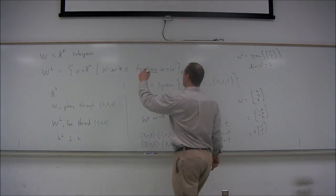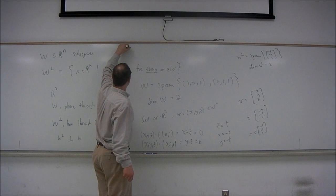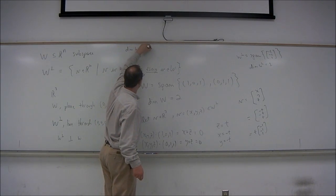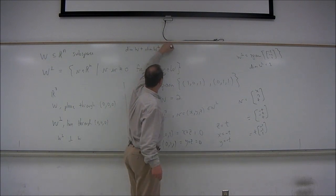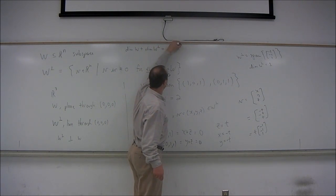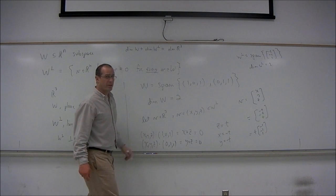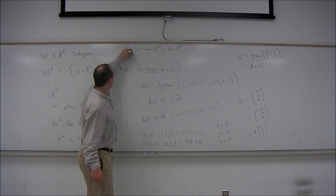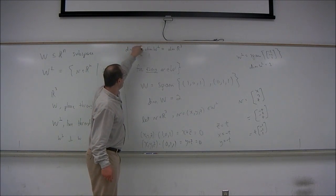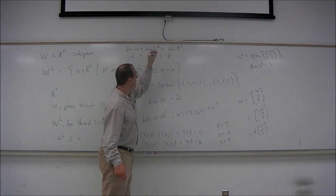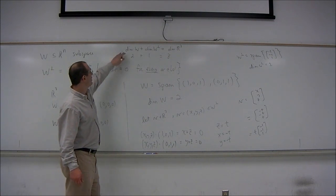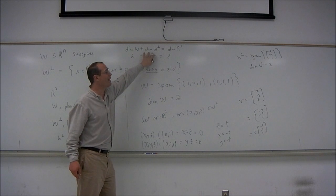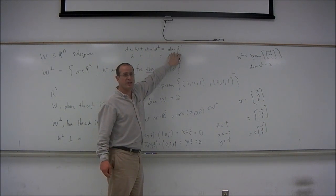Notice, as a conclusion, that the dimension of W plus the dimension of W perp is equal to the dimension—in this example, W was a subspace of R^3. The dimensions add to the dimension of R^3: two for W, one for W perp, and three for R^3. And that is a theorem. The dimension of W plus the dimension of the orthogonal complement will always give you the dimension of the whole space.